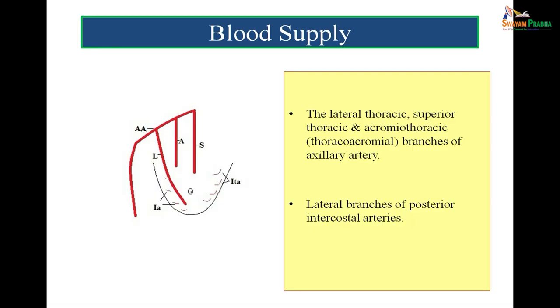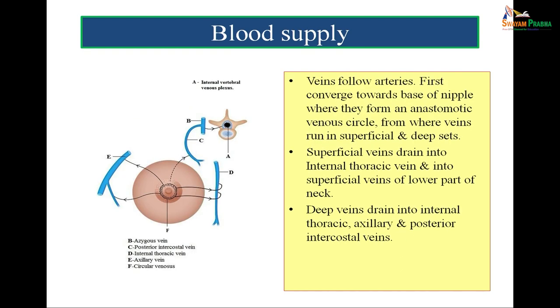In the figure, double A shows the axillary artery, S is the superior thoracic artery, A is the acromiothoracic artery, and L is the lateral thoracic artery — all branches of the axillary artery. ITA shows the perforating branches of the internal thoracic artery, and IA shows the lateral branches of the posterior intercostal arteries. The breast has very rich blood supply. The veins follow the arteries and form an anastomotic circle deep to the nipple. Importantly, the venous drainage provides a pathway via which metastasis can take place from the breast to the spine.